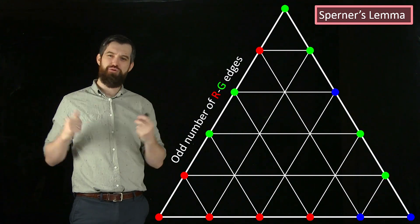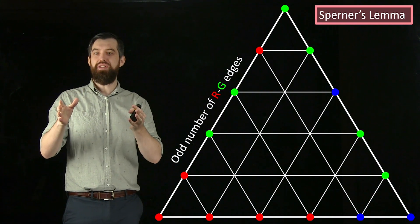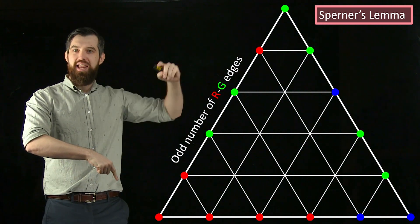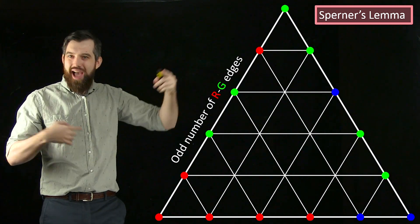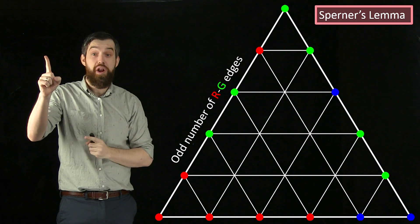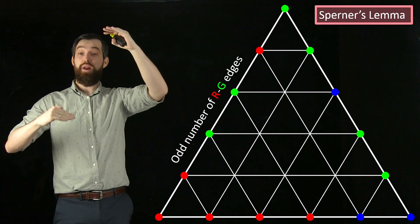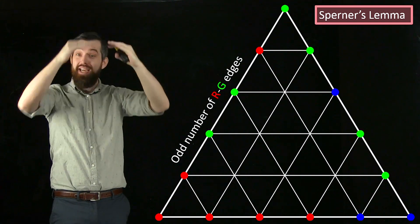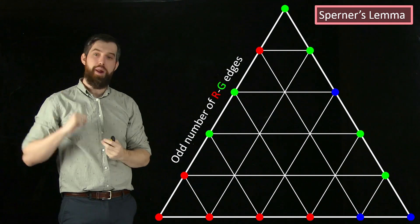My claim is that it always has to be an odd number of these red-green edges. Why is that true? It starts at red and ends at green, so there has to be at least one of them. Maybe it's red, red, red, red, red, red, but eventually it has to have one that goes to green. So there's at least one.